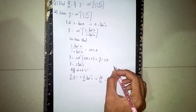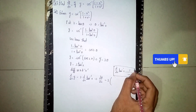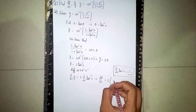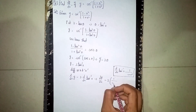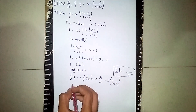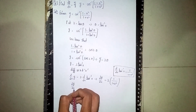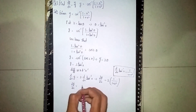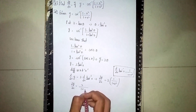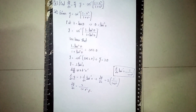This is the formula: the derivative of tan inverse x is 1 by (1 plus x square). So our final answer is dy/dx is equal to 2 by (1 plus x square). This is our solution. Thanks for watching.